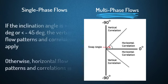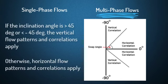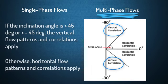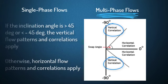We can use the inclination angle to divide multiphase flows into two groups. If the inclination angle is less than 45 degrees or more than negative 45 degrees, horizontal flow patterns and correlations will be applied. But if the inclination angle is more than 45 or less than negative 45 degrees, vertical flow patterns and correlations will be applied.